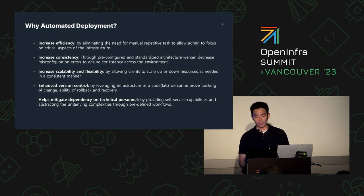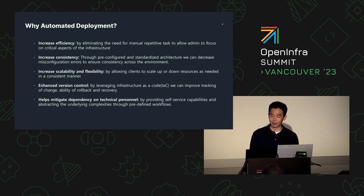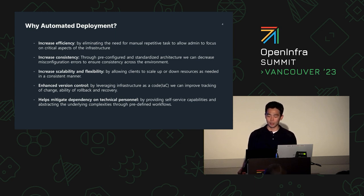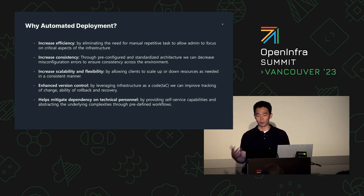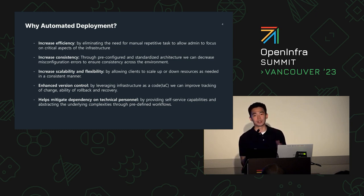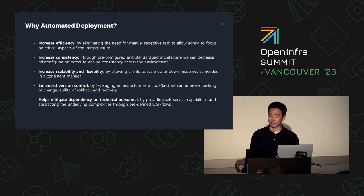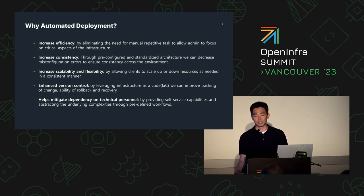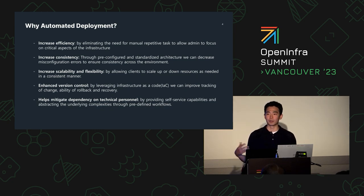The benefits of automated deployment: First, it increases efficiency by eliminating the need for manual repetitive tasks and reduces the chances of human error and variations in configurations. Second, it increases consistency and standardization, decreasing the chance of misconfiguration in OpenStack components and how you want to deploy and structure them in the environment. This simplification decreases the burden of operation. Third, it increases scalability and flexibility — if a client would like to scale up certain services, it's very simple. It also enhances version control: utilizing IaC — Infrastructure as Code — improves the efficiency of tracking your code and updates.